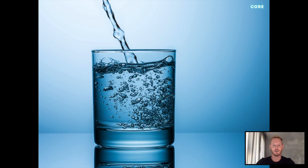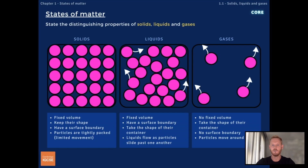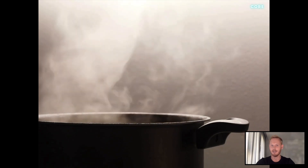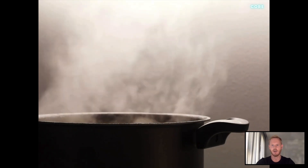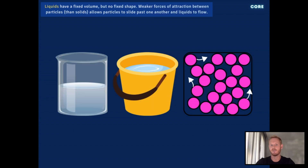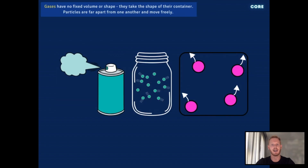Particles move around, allowing liquids to flow and take the shape of their container. Gases have no fixed volume — they can expand to fill a larger container, meaning particles spread out to fill the space, or contract to fit in a smaller one, like a pressurized gas canister. Particles are widely spaced and move around freely, meaning gases lack a surface boundary and take the shape of their container. So solids have a fixed volume and shape, which is why ice remains as a cube and doesn't fill the glass. Liquids have a fixed volume but no fixed shape, and gases have neither a fixed volume nor a fixed shape.